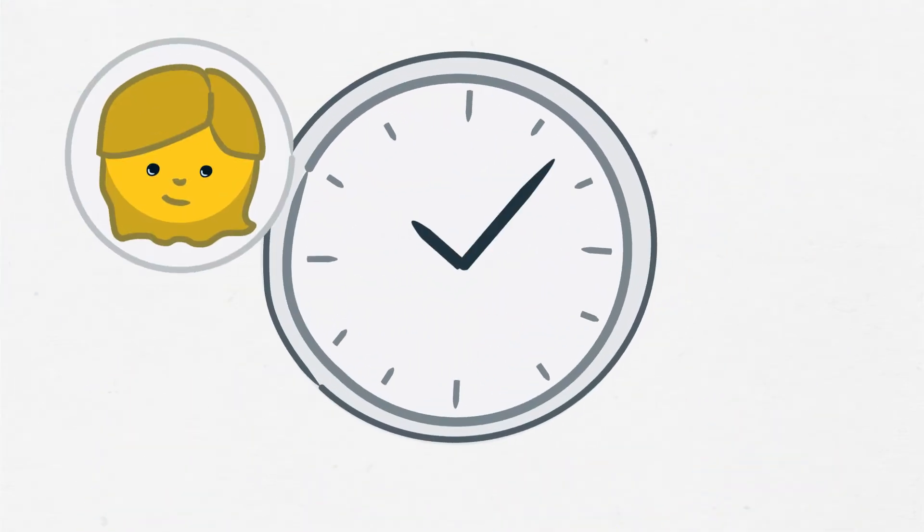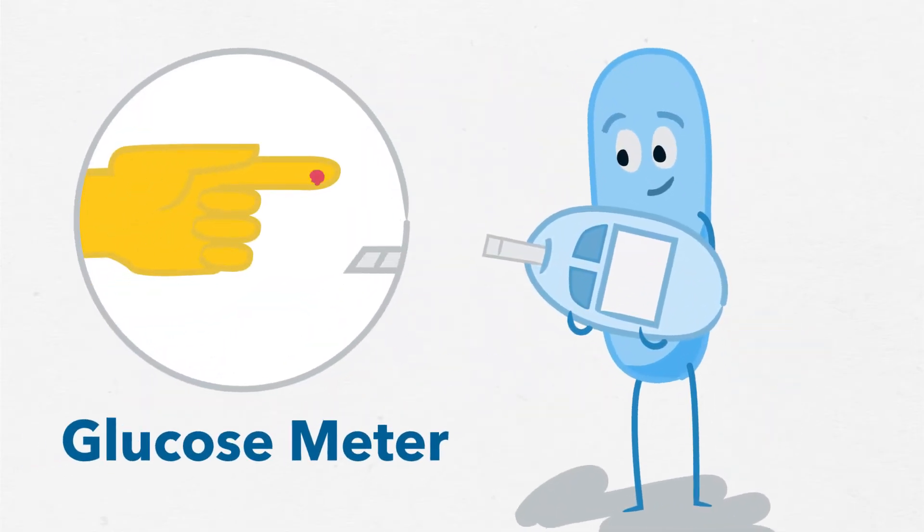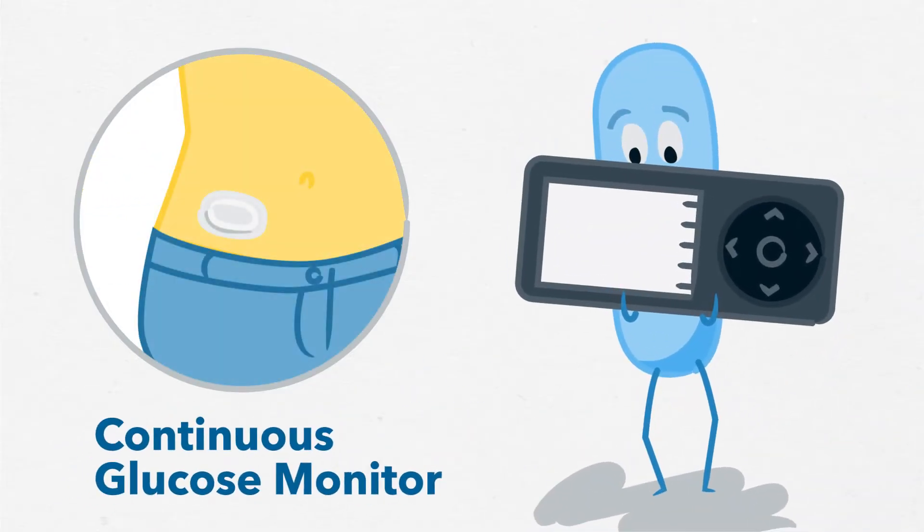Students with type 1 diabetes must check their blood sugar several times a day. This is done either with a glucose meter, which uses a small drop of blood from a finger, or a continuous glucose monitor – a wearable device that measures sugar every few minutes and sends the details to a receiver or smart device.